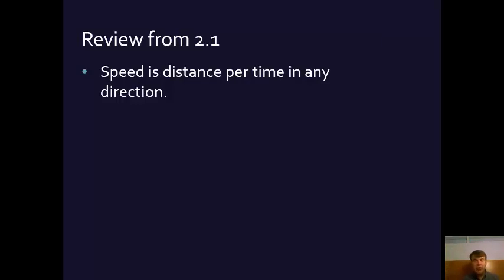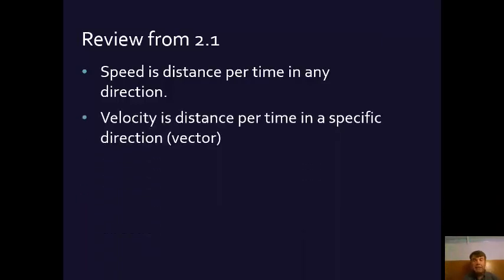On the other hand, if we talk about velocity, in physics we make a distinction between speed and velocity. Speed is simply how fast per distance you're going in any direction. But when we begin to talk about velocity, then we're talking about a specific direction. So speed might be going 55 miles per hour, but velocity is going 55 miles per hour north, and it's a vector.